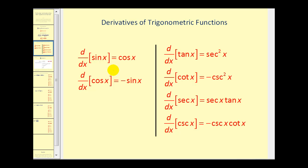We've already talked about the derivative of sine and cosine. Our new derivatives are: the derivative of tangent x is equal to secant squared x, the derivative of cotangent x is equal to negative cosecant squared x, the derivative of secant x is equal to secant x tangent x, and the derivative of cosecant x is equal to negative cosecant x cotangent x.